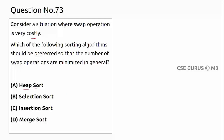In selection sort, you first find the smallest element and then swap it into position. Suppose there are 6 elements — in the worst case you might get at most 5 or 6 swaps. You find the smallest and place it in the first position, then the next position, and so on. Selection sort gives fewer swaps overall.